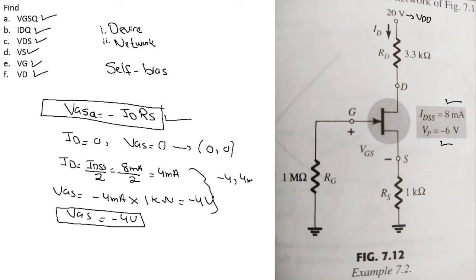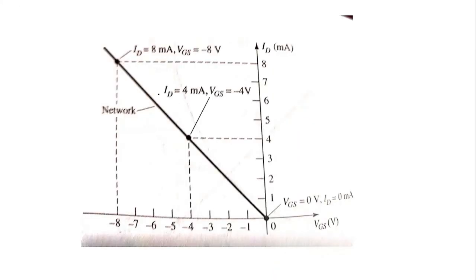Using these two points — (0, 0) and (VGS = -4V, ID = 4 mA) — I can plot the network curve. As you can see in the next slide, the first point is at (0, 0) and the second point is at VGS = -4 volts and ID = 4 milliamperes on the x- and y-axes respectively. Joining these two points gives a straight-line graph — this is my network plot.